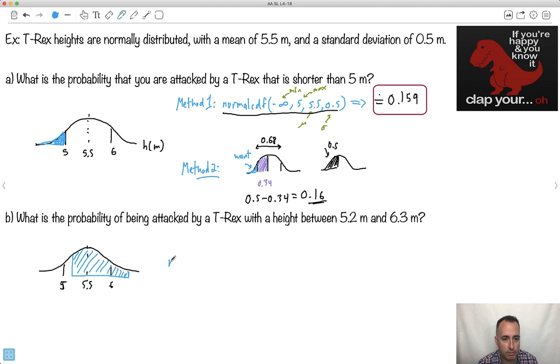I'm going to use normal CDF. I'm going to put in the min. The minimum is 5.2. The maximum is 6.3. The mean is 5.5. The standard deviation is 0.5. Just to remind you, that's what we've been doing, right? This is the probability, min, max, mean, standard deviation. Let's see what we get here.